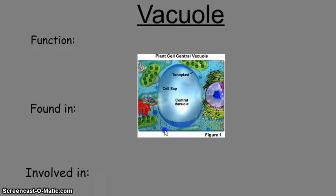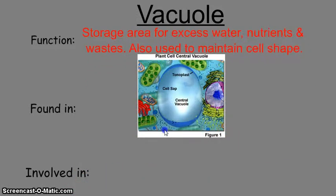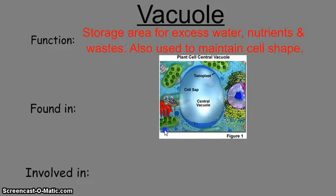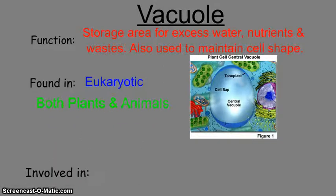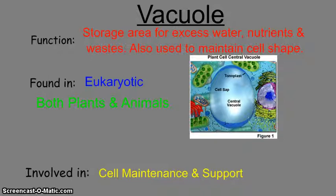The vacuole is a large, open storage space for excess water, nutrients, and wastes, and is also used to maintain cell shape. It looks like a huge bubble inside the cell. Vacuoles are found in eukaryotic cells — once thought to be only in plants since they are very prominent there, but they are found in both plants and animals. They are involved in cell maintenance and support and maintaining homeostasis.